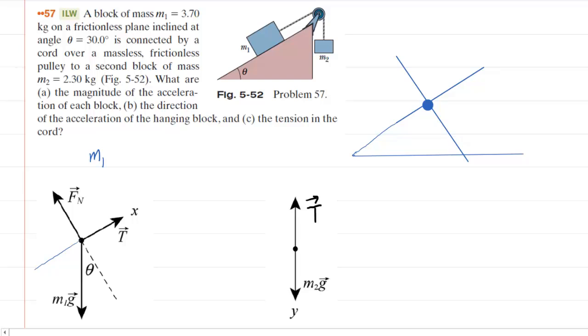A common problem presented in intro level physics is the situation in which you have two blocks connected by a rope on an inclined plane.